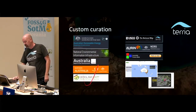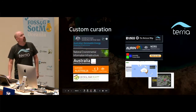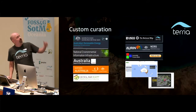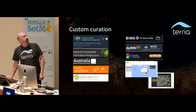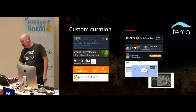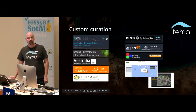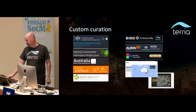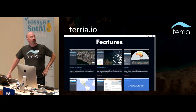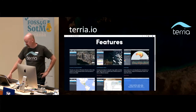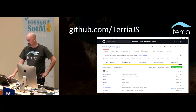On the left is a small section of the maps that we do for federal government, GeoGlam, CSIRO, and so on. The ones on the right are people who have just taken our open source platform and run their own — and that's great, that's what we want. If you want to check some of this out, you can head to terria.io, and things link off from there. Or go to GitHub.